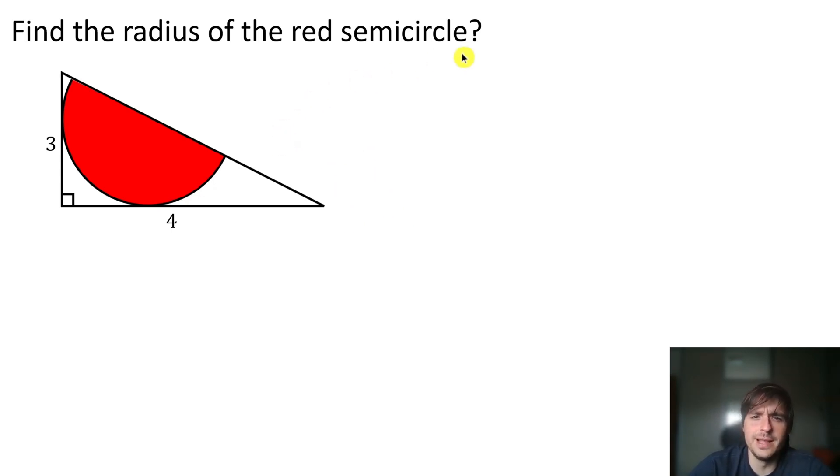Hey guys, let's find the radius of the red semicircle. Here we have a red semicircle and a right triangle. The first information we're going to use is that this is a semicircle, so in this segment here, in the middle, there is the center of the circle.